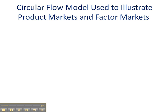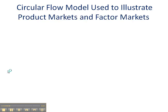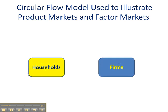Let's illustrate the two basic entities that exist in our circular flow model, the simplest form of the circular flow model. And those are firms and households. Firms are just a fancy word for businesses, and households is a fancy name for families that live in dwellings — people like you and me.